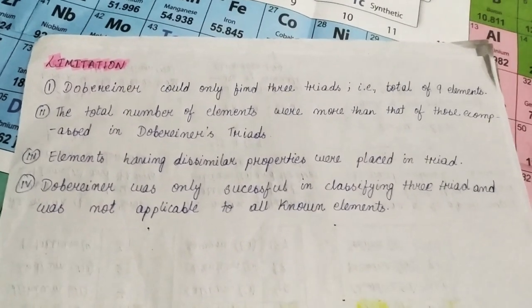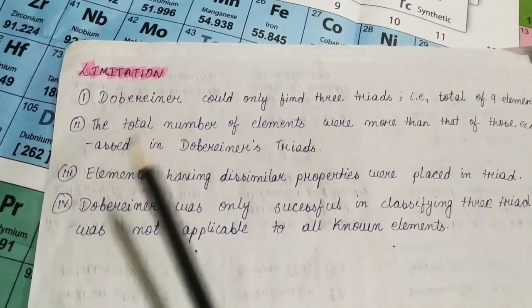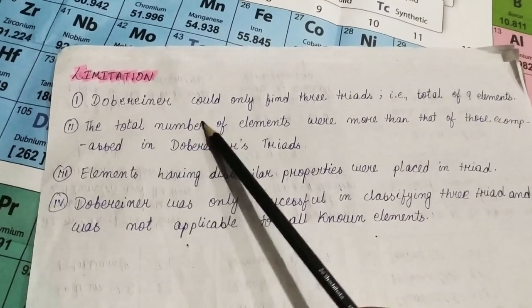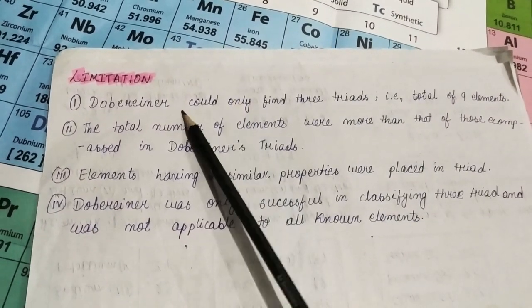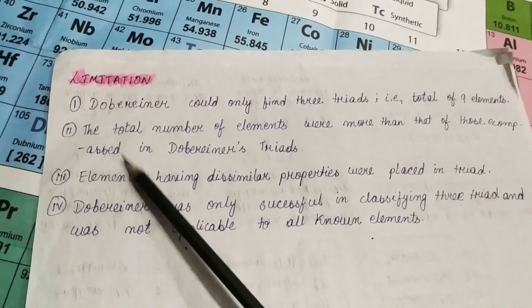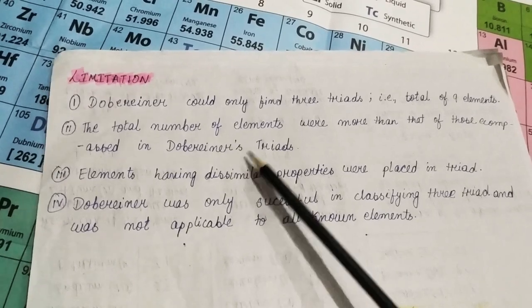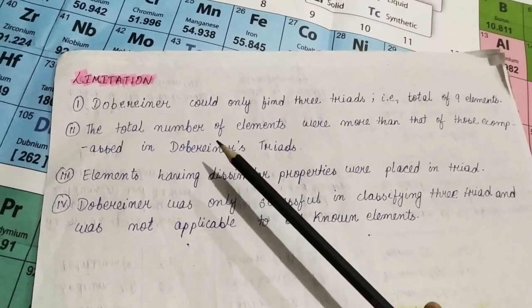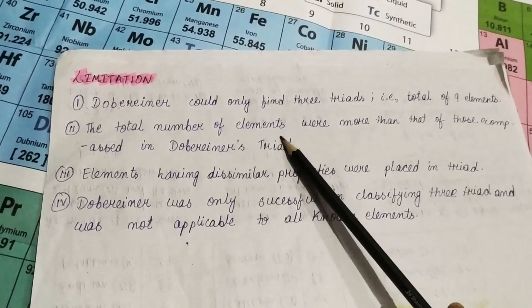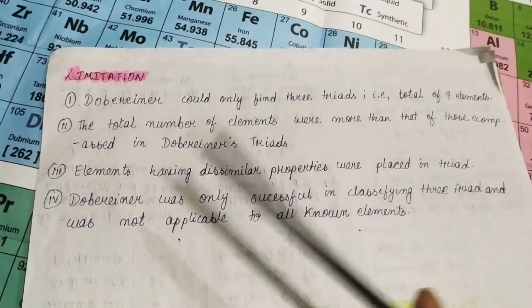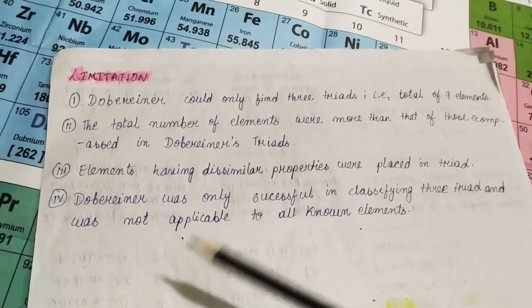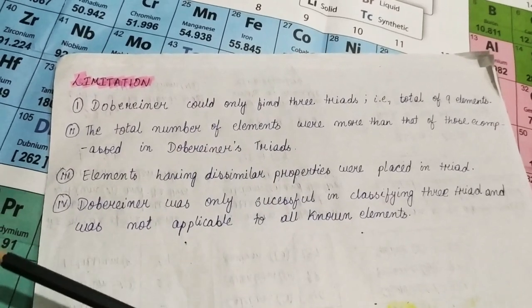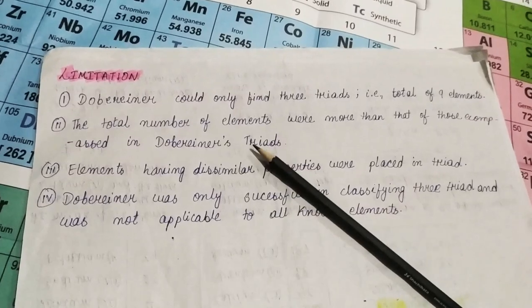Let us check the limitation of his triad, of his law of triad. See, the first one is Dobereiner could only find three triads, that is, total of nine elements. As I told you earlier that there were less than 33 elements that were discovered during his time, but he could only place nine elements in three triads. The total number of elements were more than that of those encompassed in Dobereiner triad. Elements having dissimilar properties were placed in triads. He also gave some other triads, but the elements did not have similar properties. They had some dissimilar properties, so those triads we didn't study and it's not valid. Dobereiner was only successful in classifying three triads and was not applicable to all known elements. Like I said, there were more elements, but he couldn't give them proper place. So, these are some of the limitations of Dobereiner's law of triad.